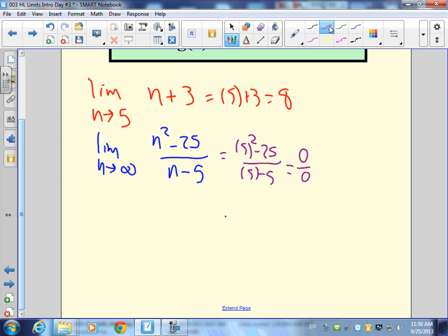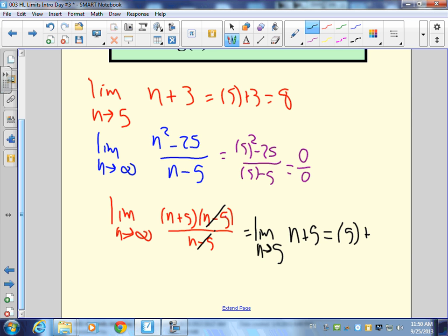So here's what I'm going to do. I'm going to say the limit, N approaches infinity, factor this, N plus 5, N minus 5, right? A difference of two squares, N minus 5. What cancels? So this cancels out and you get the limit as N approaches 5 of N plus 5 and what's that going to be? 10. So 0 over 0 equals 10. Did you know that? You learn something every day.